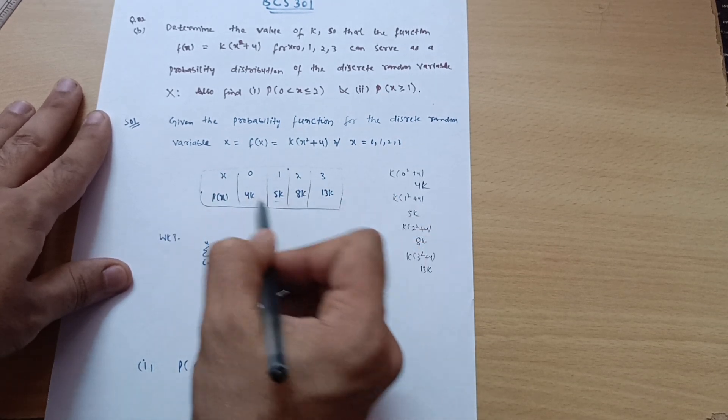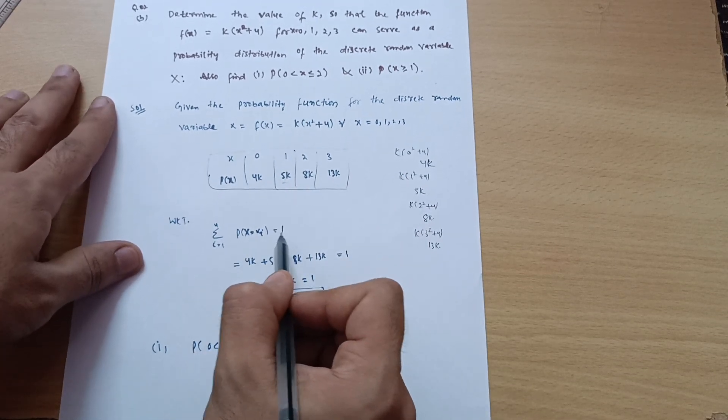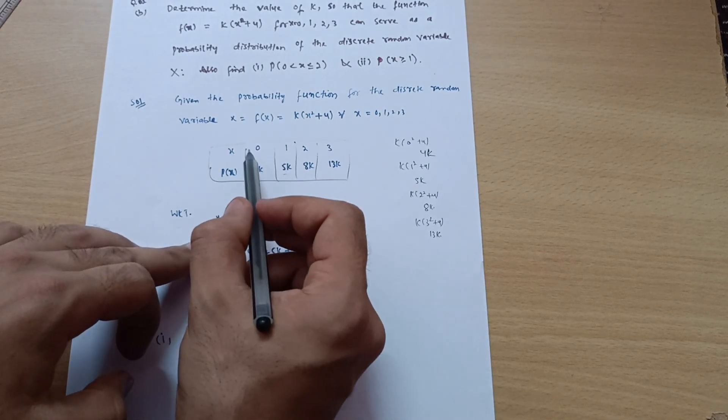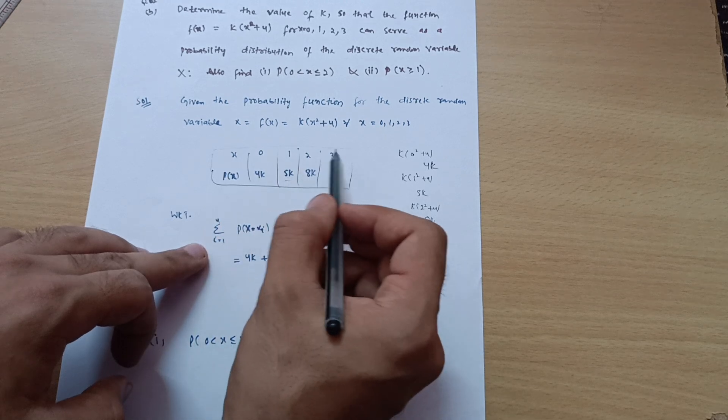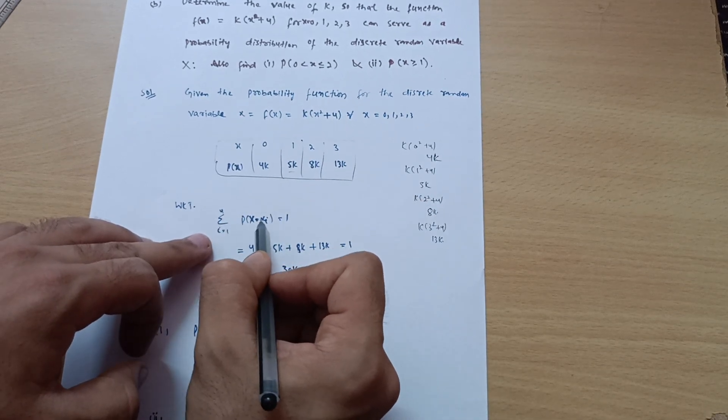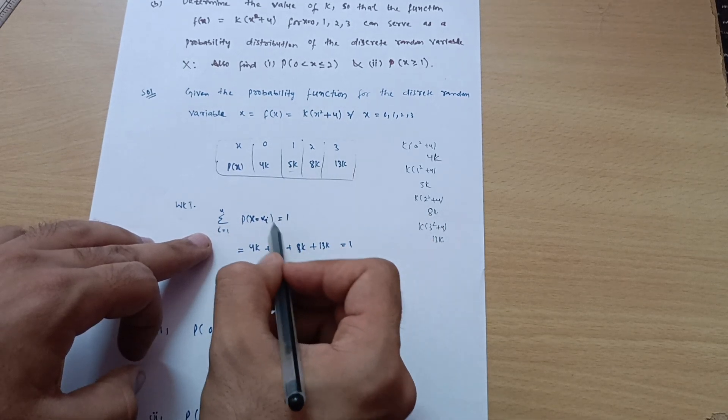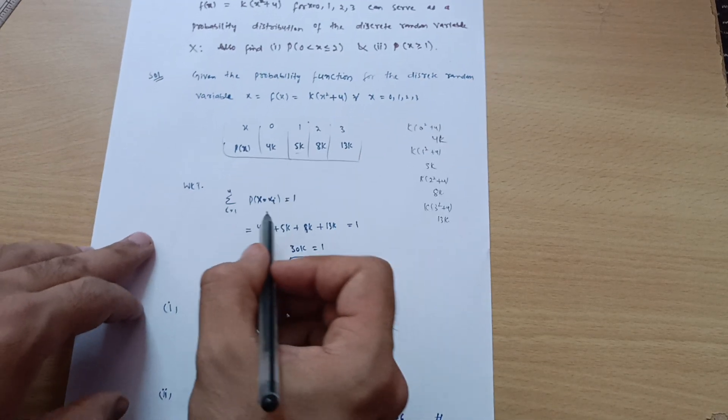Already you know summation of the probabilities is always equal to 1. It is represented as i running from 1 to 4—I take 1 to 4 because 4 values are there: 0, 1, 2, 3. So p(x = xi) equals 1. Summation of probabilities is always equal to 1.